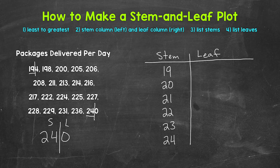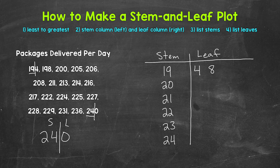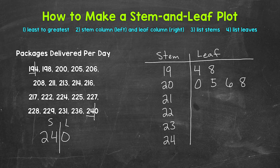Now we need to list our leaves, going in order starting with 194. We have a stem of 19 with a leaf of 4. Then 198 — stem of 19, leaf of 8. Next, 200 — we move down to the stem of 20 with a leaf of 0. Then 205, leaf of 5. Then 206, leaf of 6. Then 208, leaf of 8.